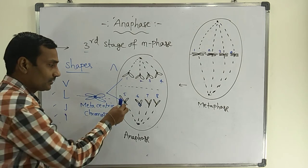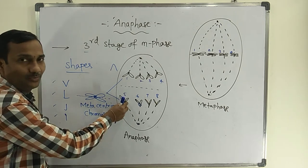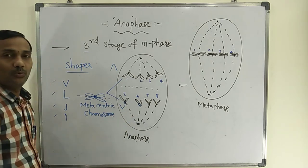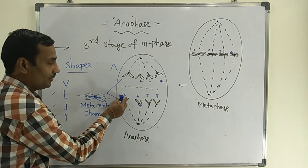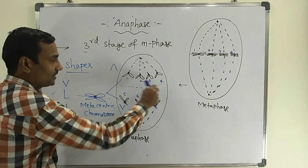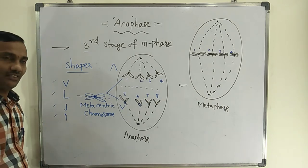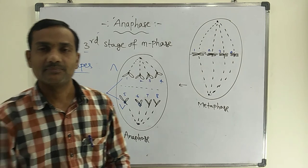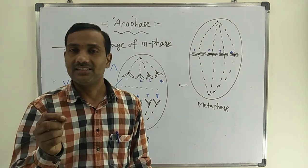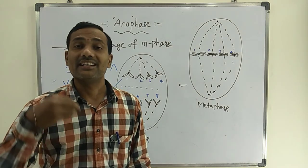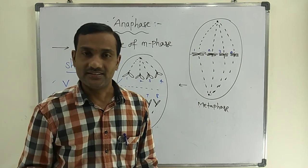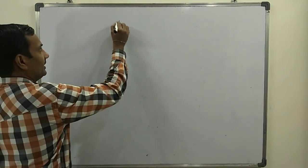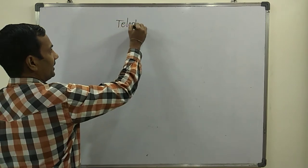The kinetochore, which is part of the centromere, acts as the centromere of the newly formed daughter chromosomes. Spindle fibers are connected to the centromere via the kinetochore. So the centromere faces toward the pole, while the chromosome arms face toward the equator or center of the cell. After anaphase, the cell enters telophase.